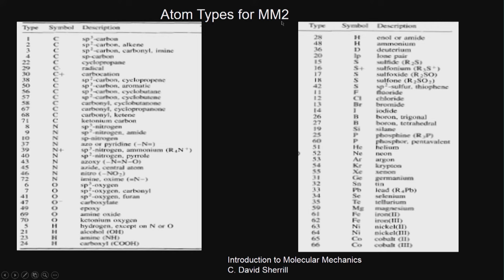For example, let us look at the different types of carbons MM2 has. There is sp3 carbon, sp2 carbon in alkene, sp2 carbon in carbonyl and imine, sp carbon, cyclopropane carbon, radical carbon, carbocation, sp2 carbon in cyclopropane, sp2 carbon in aromatic, and sp3 carbon in cyclobutane. Each of these carbons differs, so you may have different force constants and different R0 values.